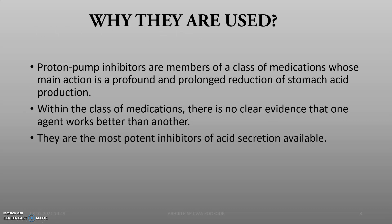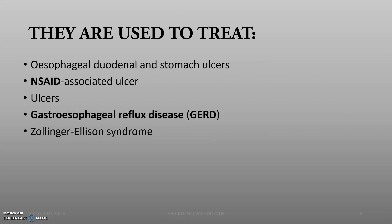Proton pump inhibitors are the actual medications used to reduce stomach acid production by inhibiting acid secretion. They are used to treat esophageal, duodenal, and stomach ulcers, normal ulcers, NSAID-associated ulcers, gastroesophageal reflux disease, and Zollinger-Ellison syndrome.